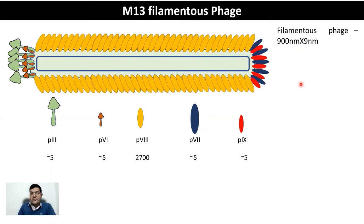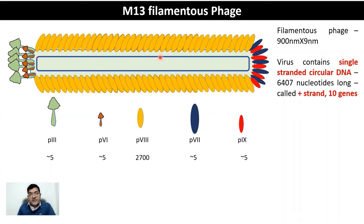The virus contains single-stranded circular DNA — in contrast to the double-stranded DNA present in Lambda phage. Here you have a single-stranded circular DNA, around 6407 nucleotides long, the sense is the plus strand, and it has around 10 genes in total.